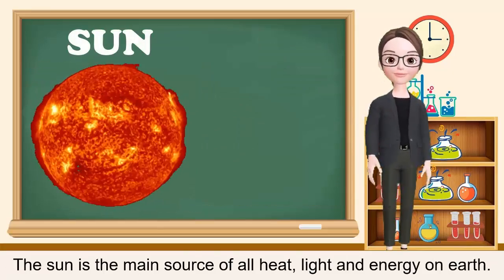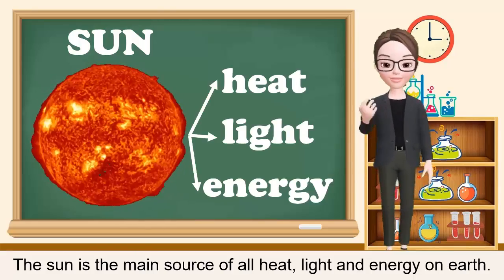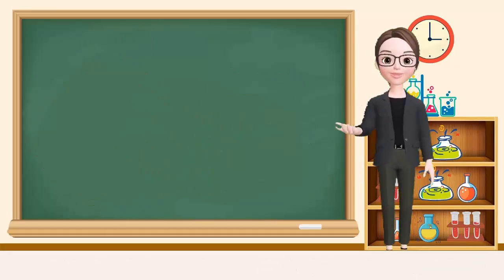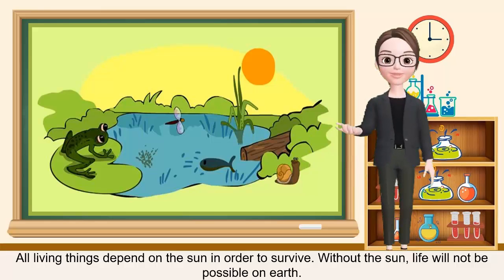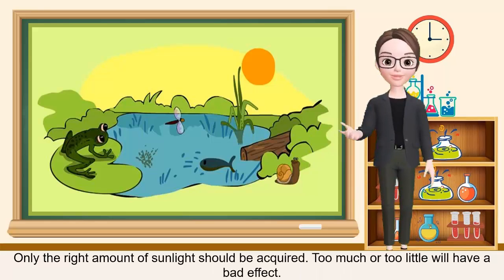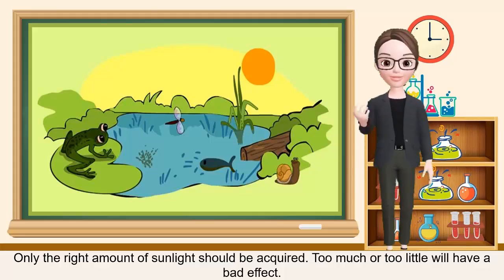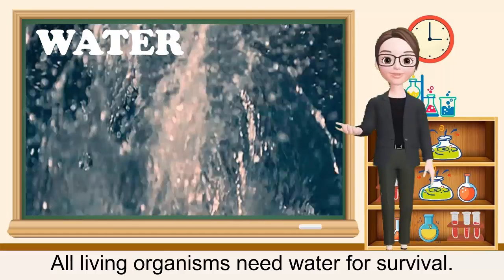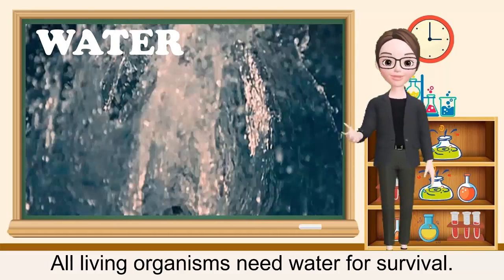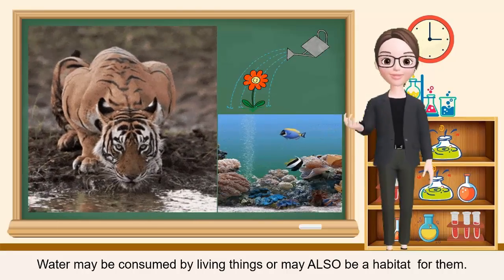Next, we have the sun. The sun is the main source of all heat, light, and energy on Earth. All living things depend on the sun in order to survive. Without the sun, life will not be possible on Earth. Only the right amount of sunlight should be acquired — too much or too little will have a bad effect. Water: all living organisms need water for survival. Water may be consumed by living things or may also be a habitat for them.